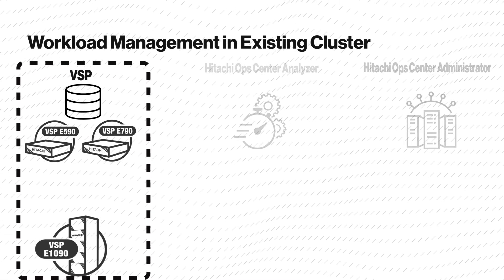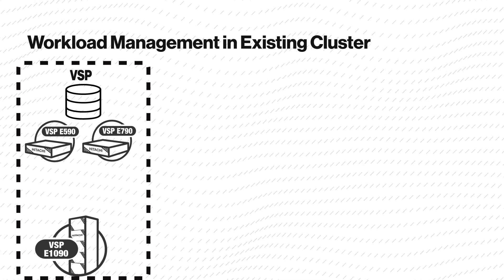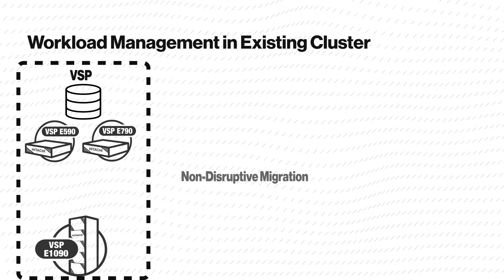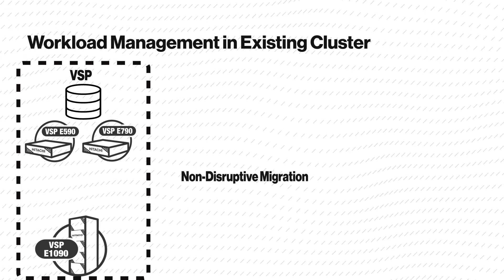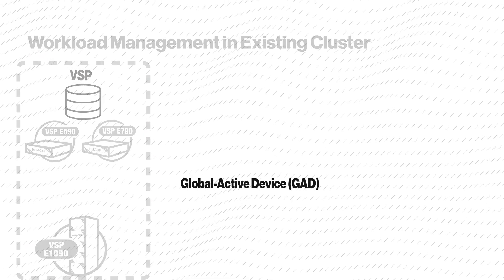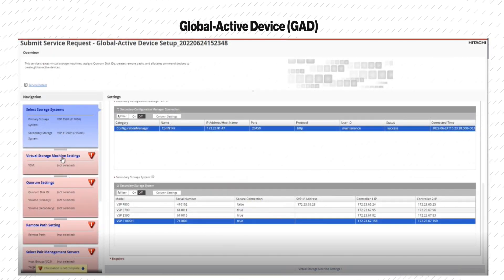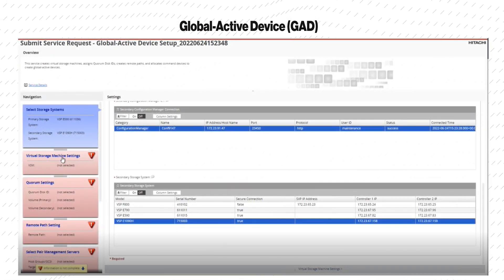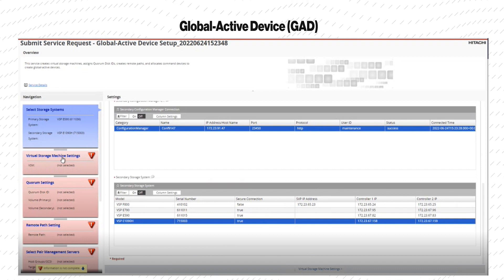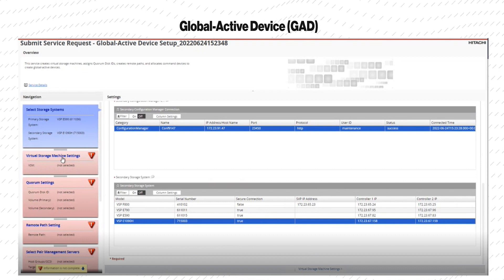After adding a new node, we can migrate volumes to the new storage system by using any of Hitachi's proven migration technologies, such as non-disruptive migration or global active device (GAD). If you want to use GAD, you can use the Ops Center Automator Service Templates to expand the VSSO cluster with the third VSP-E1090 node in addition to completing the migration prerequisites.